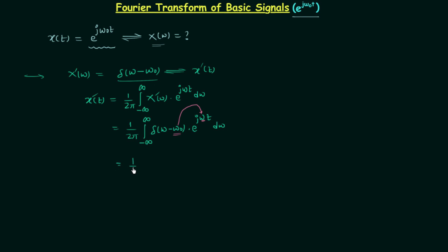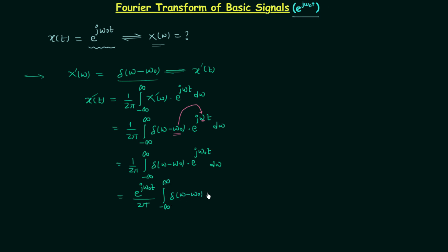So we have (1/2π) ∫₋∞^∞ δ(ω − ω₀) · e^(jω₀t) dω. Since ω₀ is a constant, e^(jω₀t) is also a constant with respect to ω, and therefore we can take it out of the integration. This gives us e^(jω₀t) / 2π multiplied by ∫₋∞^∞ δ(ω − ω₀) dω, and we are left with this integration to evaluate.